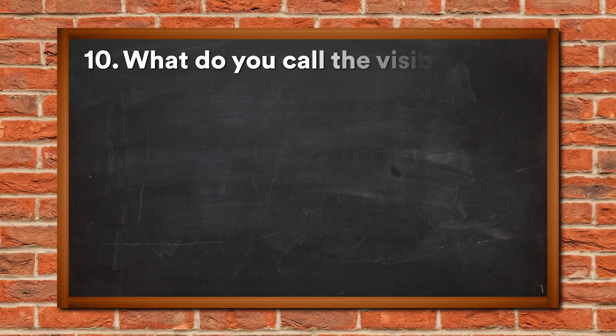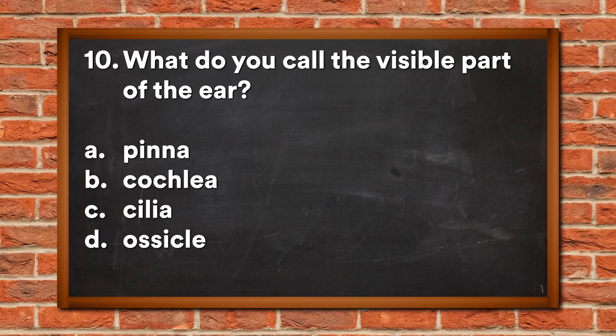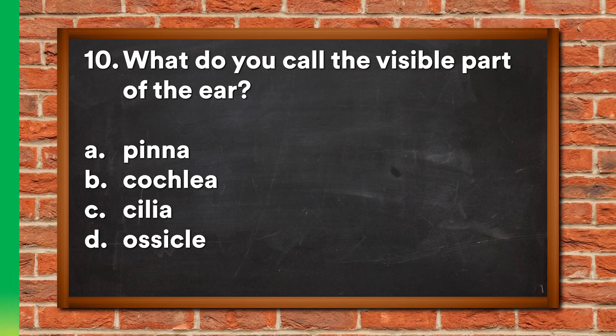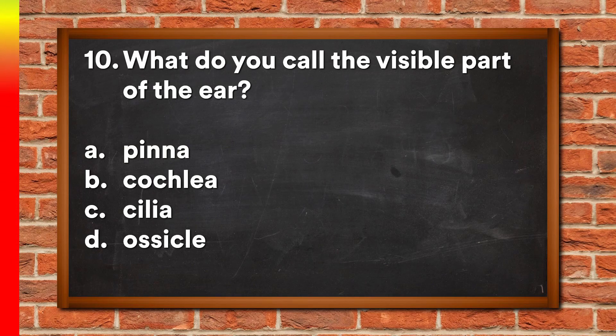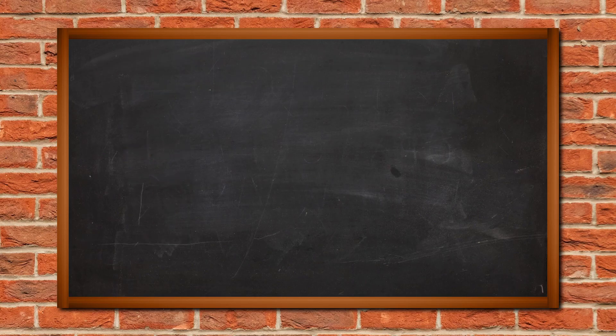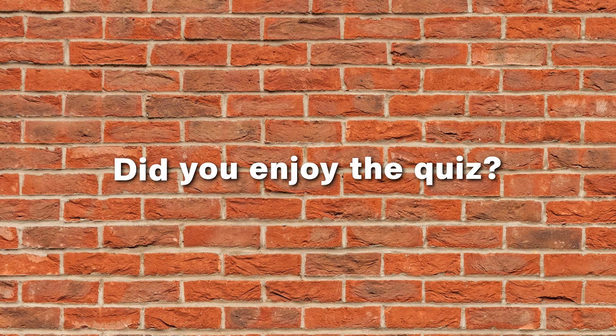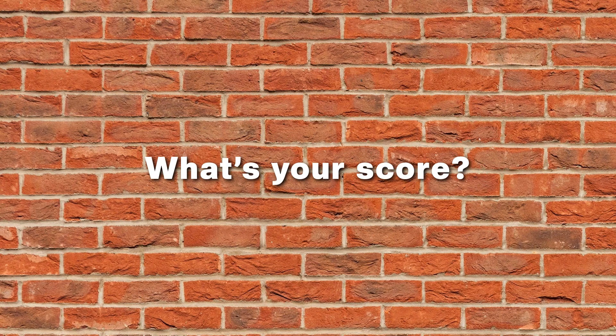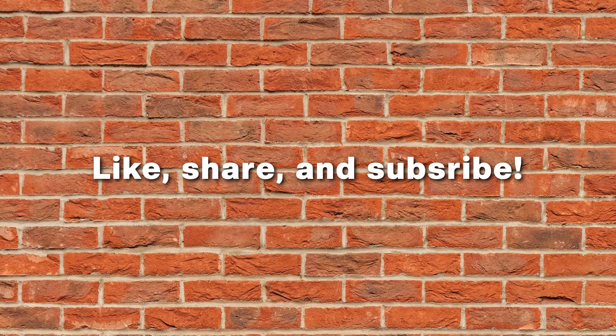Question 10: What do you call the visible part of the ear? A. Pinna, B. Cochlea, C. Cilia, D. Ossicle. The answer is A, Pinna.